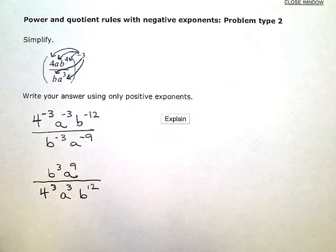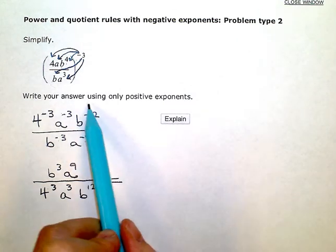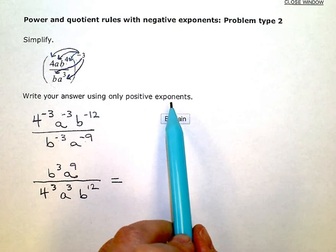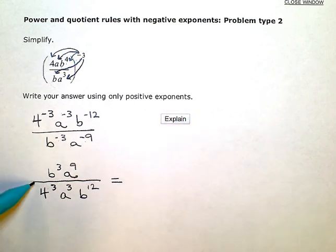Now that I have everything rearranged, and there's no more negative exponents, I have only positive exponents, now I'm just going to simplify.